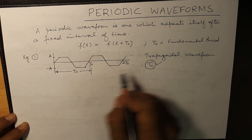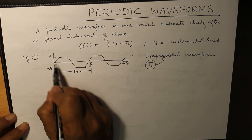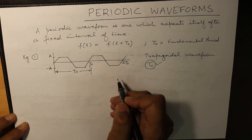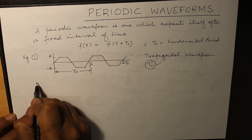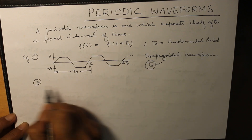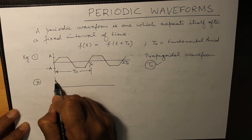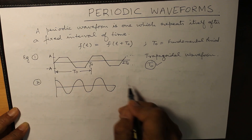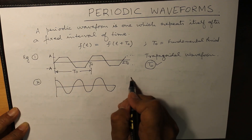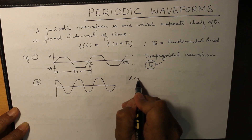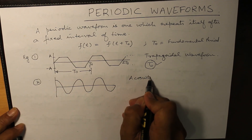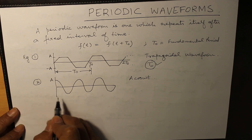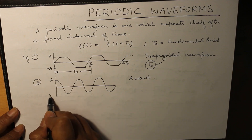Though it is seen to repeat after 2t0 also, and so on. Second example: this is a cosine wave A cos(ωt), where A is the amplitude.